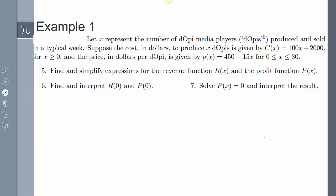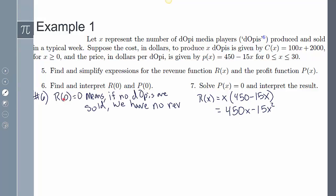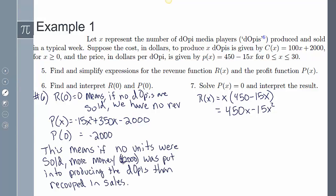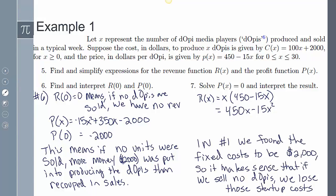So next, it says find and interpret R(0) and P(0). So if we said that this was our R function, then that means that R(0), if I plug in zero into this, I just get zero. This means that if no DOPs are sold, we have no revenue. And then my profit being zero, if I plug in zero, I just get negative 2000 because zero plus zero minus 2000 is negative 2000. That means if no units are sold, more money was put into producing them than I actually got in sales. So I lost $2000, which kind of makes sense because if you go back to number one, we found that the fixed cost to be 2000. And so notice the fixed costs match that.